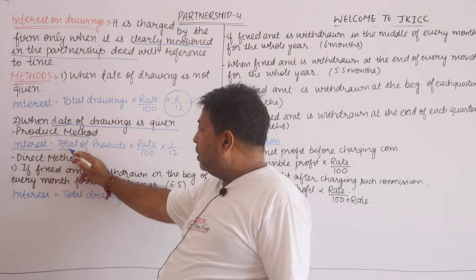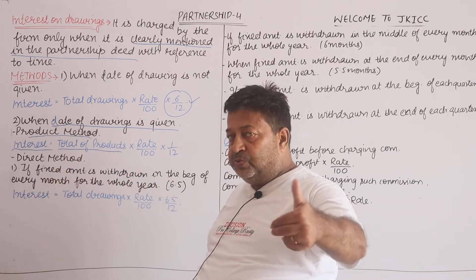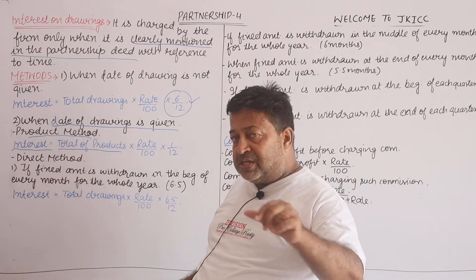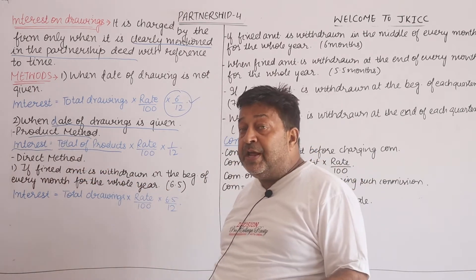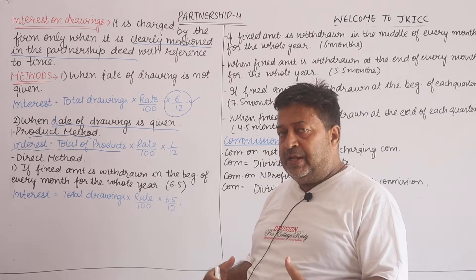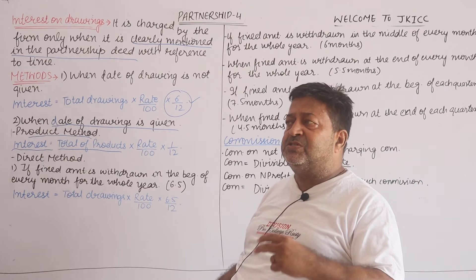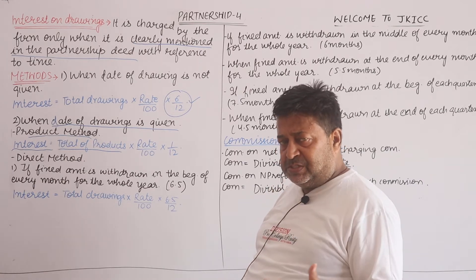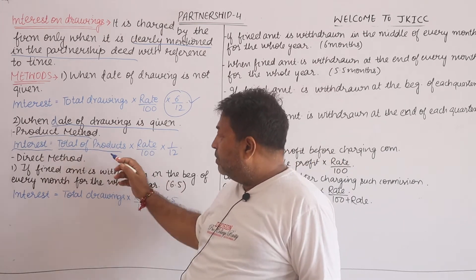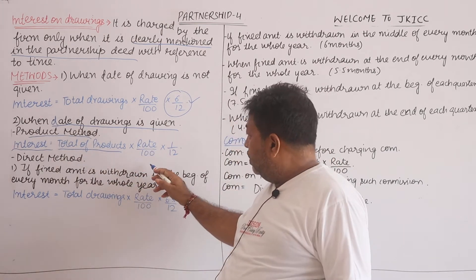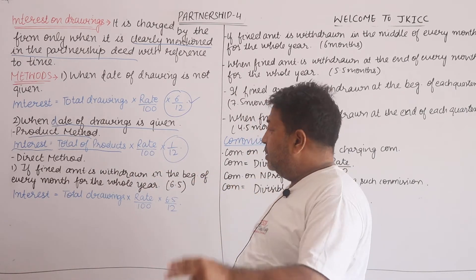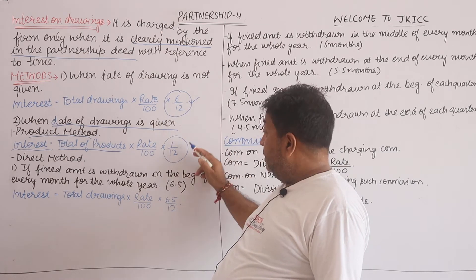In the product method, we calculate the total of products. I will show you the numericals tomorrow. We will write down the formulas now and apply them tomorrow — we will do all the numericals together. This is very important, and you must understand it. In the product method, the total of products is multiplied by 1/12, because when we calculate the product over the year we use 1/12. Remember: Case 1 uses 6/12; the product method uses 1/12.